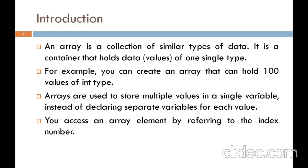Arrays in Java work differently than they do in C and C++. Some important points about Java arrays: Java arrays are dynamically allocated. Java arrays are objects, so we can find the length of the elements using the member 'length' — this differs from C and C++ where we find the length using 'sizeof'. Java arrays can also be declared like other variables with square brackets after the data type.